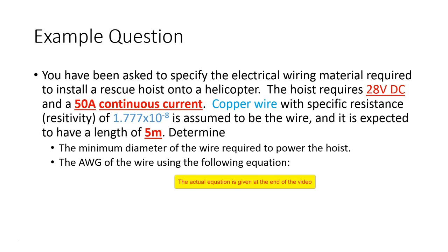The hoist requires 28V DC and a 50A continuous current. A copper wire with specific resistance of 1.77 by 10 to the power minus 8 ohms per meter is assumed to be the wire and it is expected to have a length of 5 meters.